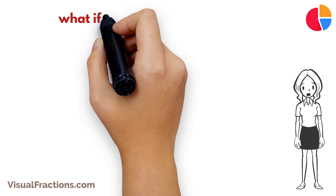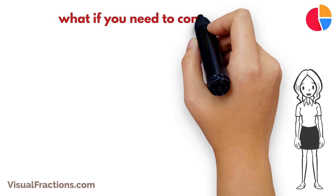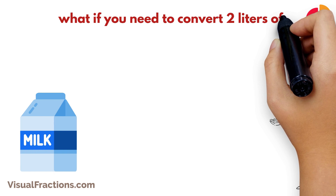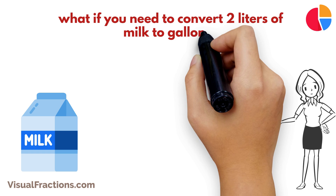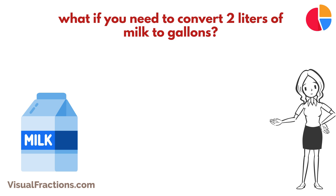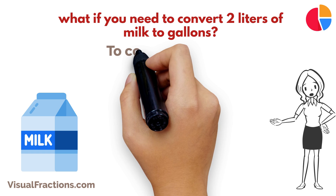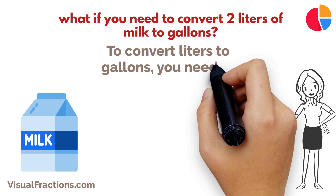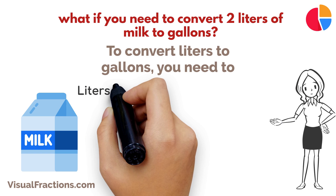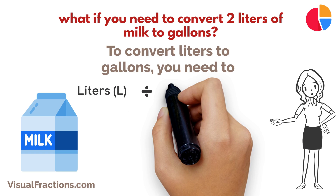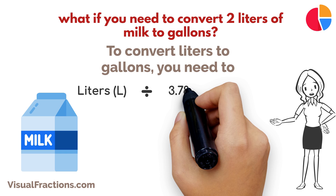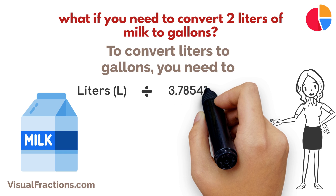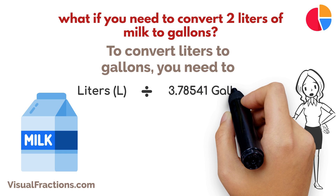But what if you need to convert 2 liters of milk to gallons? Don't worry, we've got you covered. To convert liters to gallons, you need to divide the number of liters by the conversion factor of 3.78541.